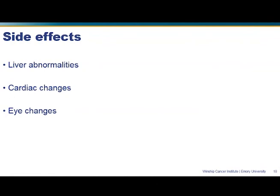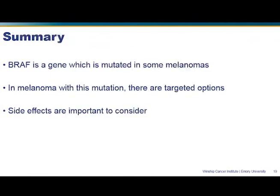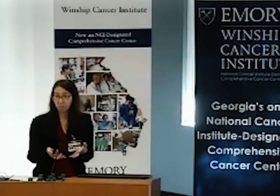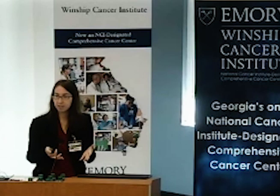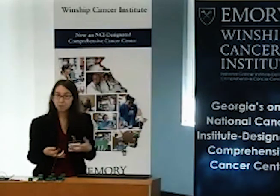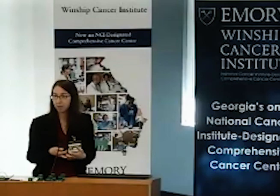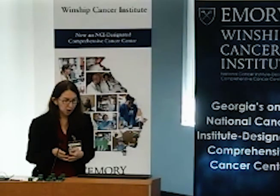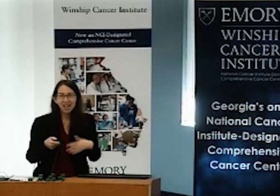To summarize: BRAF is a gene that is mutated in some melanomas, and this is one of the targeted therapy options in melanoma. Side effects are important to consider — I went through some of the more serious and more common ones — and that's something to keep in mind when thinking about this as a treatment option. I'm happy to answer any questions, or we can leave them for later. I believe we have the break next, but feel free to come up and ask any questions you have.